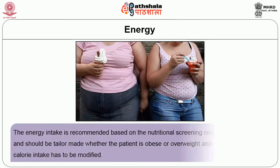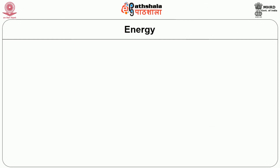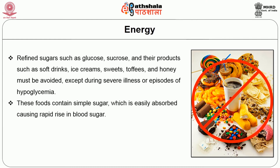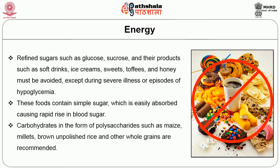The energy intake is recommended based on the nutritional screening results of the patient and should be tailor-made. Whether the patient is obese or overweight, a calorie reduction is advised; if the person is of normal weight, ideal weight management is advised. Carbohydrate-rich foods like refined sugars and their products such as soft drinks, ice creams, sweets, and honey must be avoided except during severe illness or episodes of hypoglycemia. Carbohydrates in the form of polysaccharides such as millets, brown unpolished rice, and other whole grains are recommended.